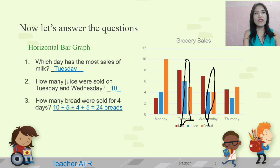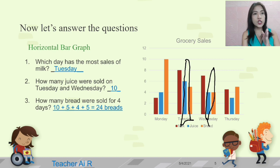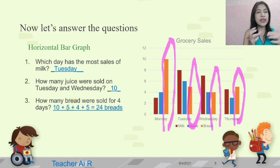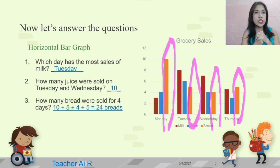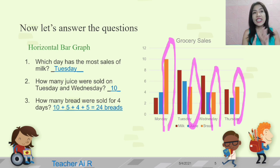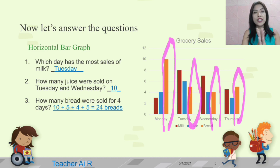Next question: how many breads were sold for four days? We're going to add the bread from Monday, Tuesday, Wednesday, and Thursday. The bread is in orange color. For Monday it's ten, for Tuesday it's five, for Wednesday it's four, and for Thursday it's five. When we add them together: 10 plus 5 is 15, plus 4 is 19, plus 5 is 24. So, there are 24 breads sold for four days.